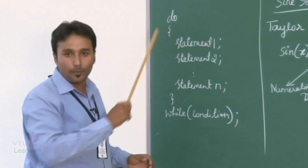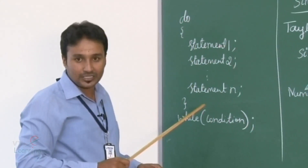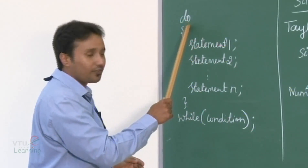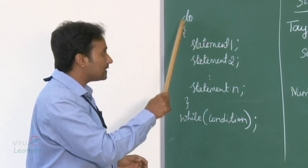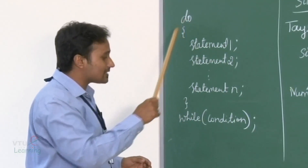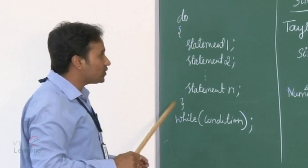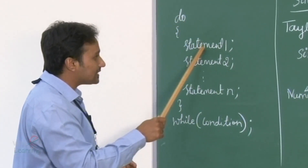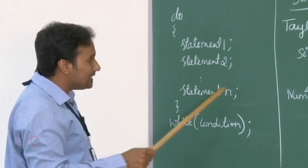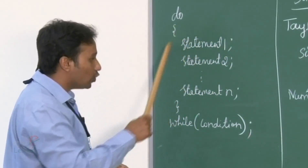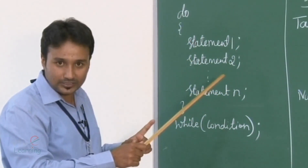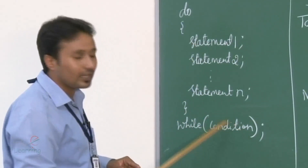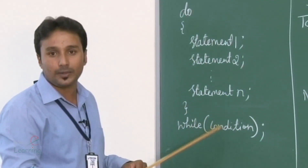As we discussed earlier, this program deals with do-while looping constructs. Let's look into the syntax. The do-while is a looping construct which executes a set of statements inside the do block at least once before checking its condition in the while part.